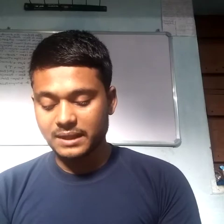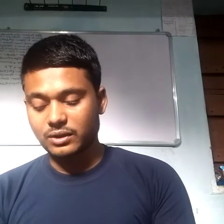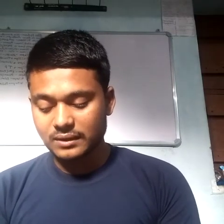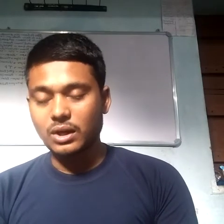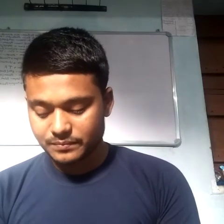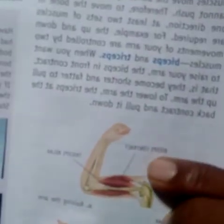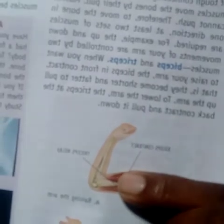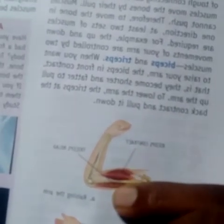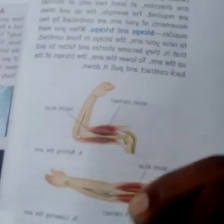When you want to raise your hand, the biceps in the front contract and become shorter and fatter to pull up the arm. To lower the arm, the triceps at the back contract to pull. During contraction, the bicep increases and the triceps decreases. During relaxation, both are equal. You can see the difference between biceps and triceps during contraction and during relaxation.